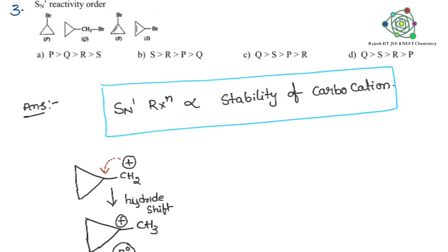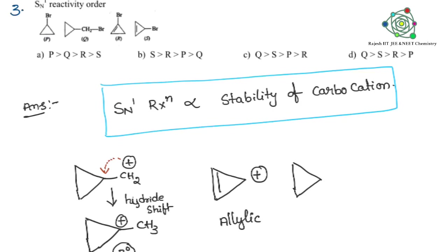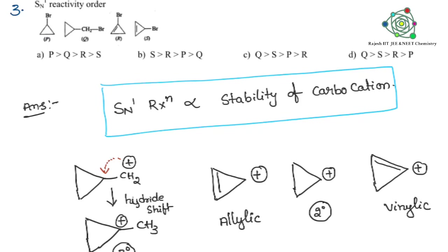Tertiary carbocation is more stable than primary. Compound S gives an allyl carbocation — more stable due to resonance. Compound P gives a second degree carbocation. The last one is a vinyl carbocation. So the reactivity order for SN1 is: tertiary > allyl > secondary > vinyl. Therefore the answer for this question is the third option.